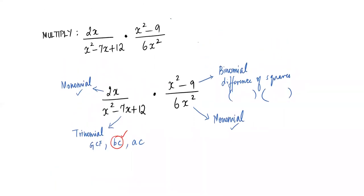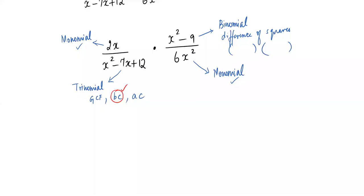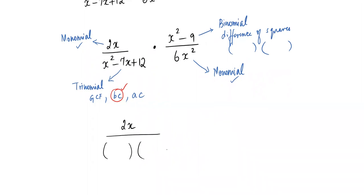Now let's apply the identified strategies. The monomial stays as is. For the trinomial, use the BC method: find two numbers whose product is 12 and whose sum is negative 7. Since the sum is negative, look for two negative numbers — negative 4 and negative 3 is the winner.